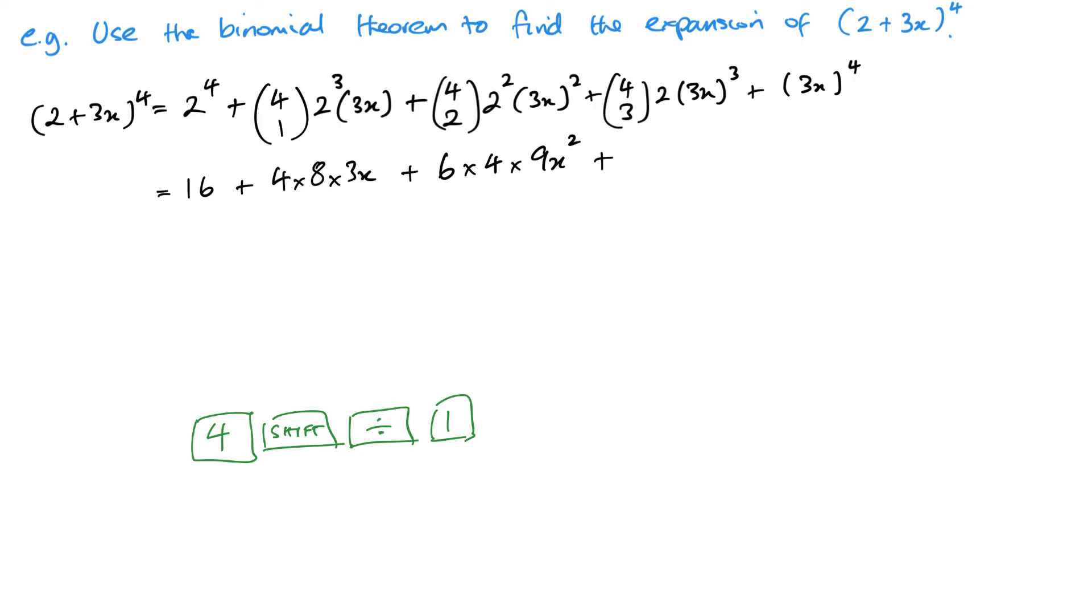And again, go into your calculator and get in your 4 choose 3. You'll get the value 4, that's times 2, and then 3 cubed is 27x cubed. And then finally, 3x to the power of 4 is 81x to the power of 4.